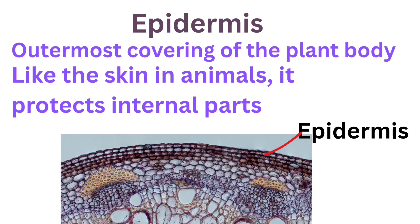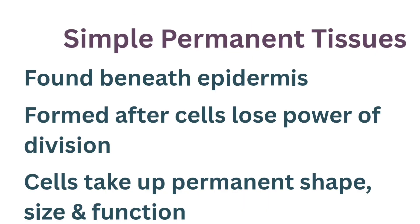Our next topic is simple permanent tissues, but first let us recall the epidermis. Epidermis is the outermost protective covering of the plant body — just like our skin protects us — and it safeguards the inner tissues of stems, leaves and roots. Just beneath this epidermis we find a few layers of cells that form the simple permanent tissues. When newly formed cells lose the ability to divide and take up a permanent shape, size and function, they form permanent tissues, and these layers beneath the epidermis are called simple permanent tissues.